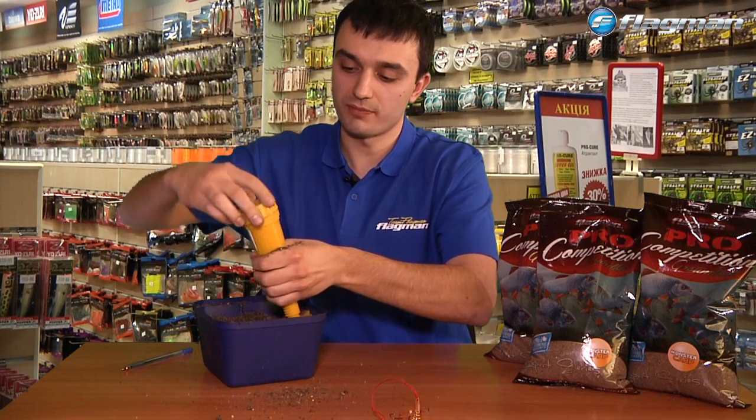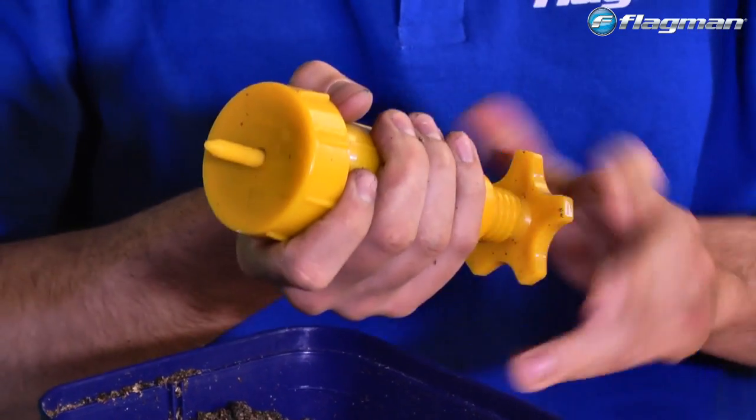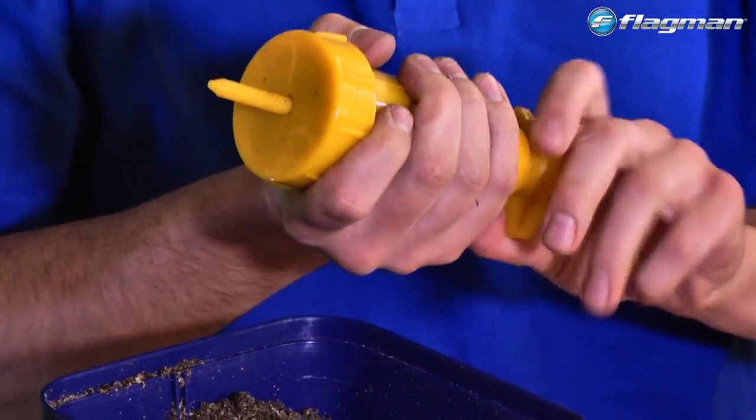Дальше одеваем насадку и начинаем прессовать. От степени сжатия зависит время работы прикормки.